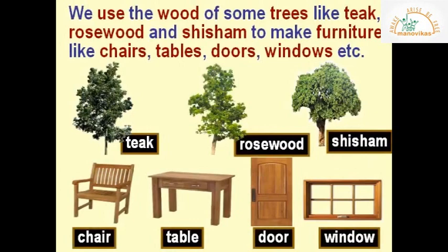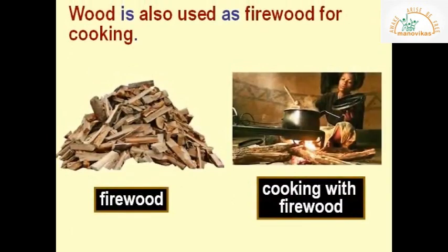We use the wood of some trees like teak, rosewood, and shisham to make furniture like chairs, tables, doors, and windows. Wood is also used as firewood for cooking.